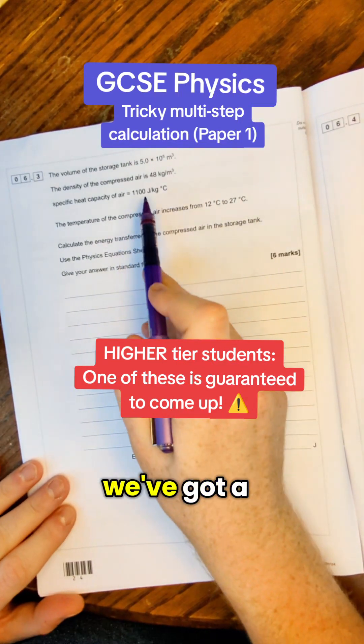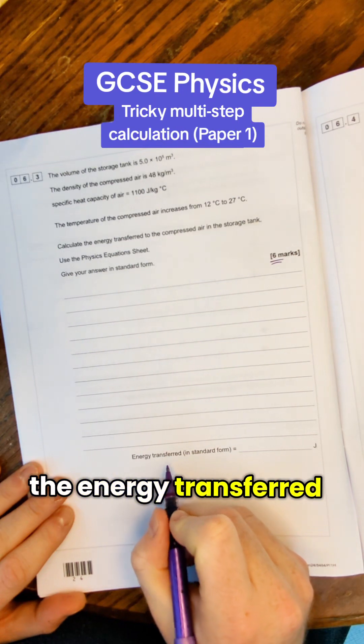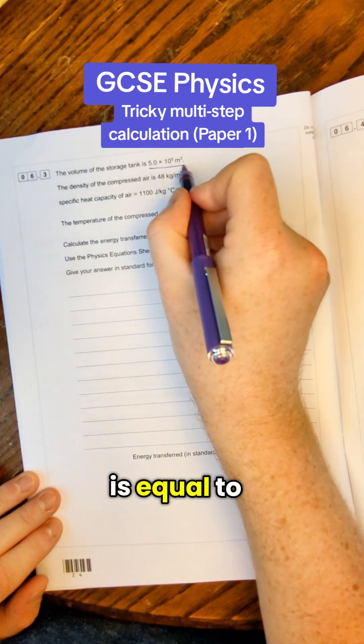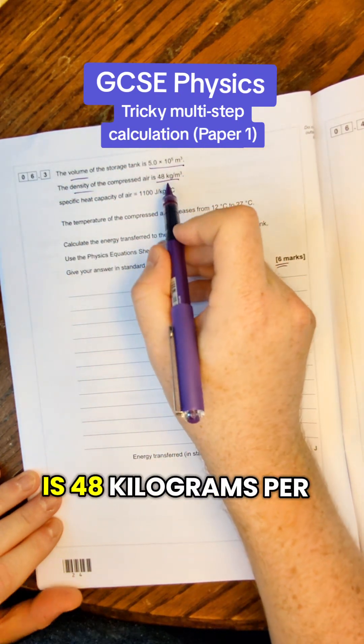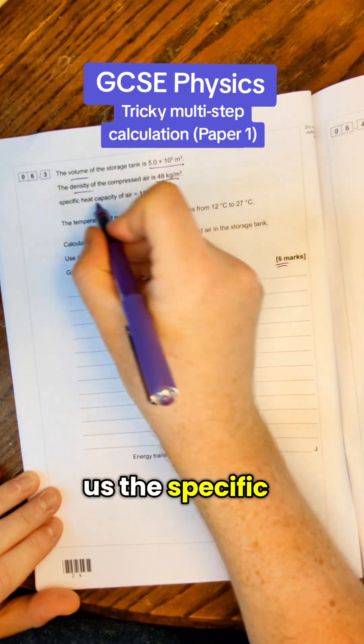It's multi-step calculation time. We've got a load of numbers here and six marks to solve what the energy transferred by this gas is. The volume of a storage tank is equal to 5 times 10 to the power 5. The density of the air is 48 kilograms per meter cubed. That's compressed air and it tells us the specific heat capacity of it.